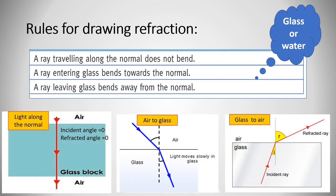A ray traveling along the normal does not bend. That's the first rule. The figure on the left can explain it. Light along the normal, so the light here will be incident on the normal with no incident angle. The incident angle equals zero, the refracted angle equals zero, so there is no refraction.